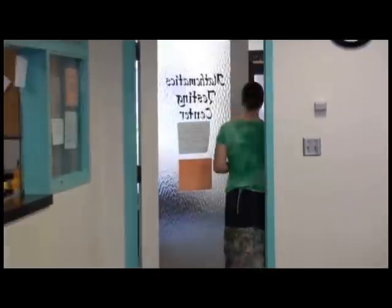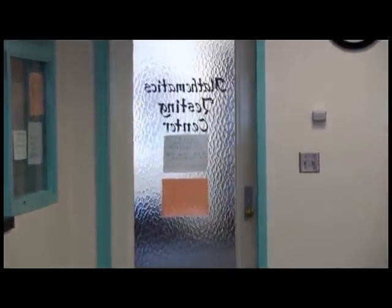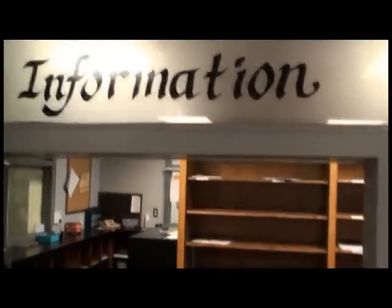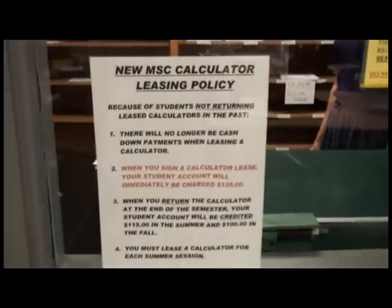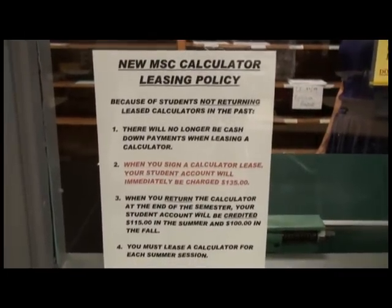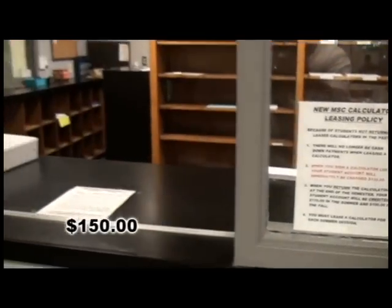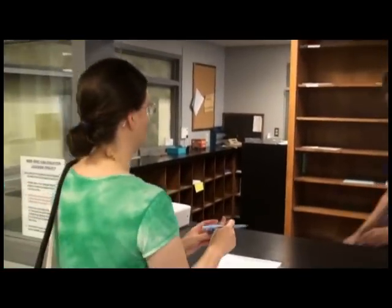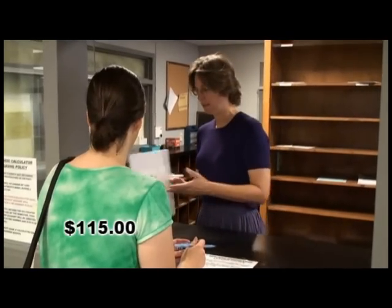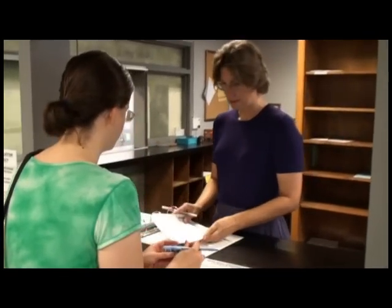If you don't want to buy a graphing calculator, you can rent one from the math department. Go to the information window in the tutoring center. After you fill out a form, your NMSU account will be billed $150. When you return the calculator at the end of the semester, $115 will be credited to your account.